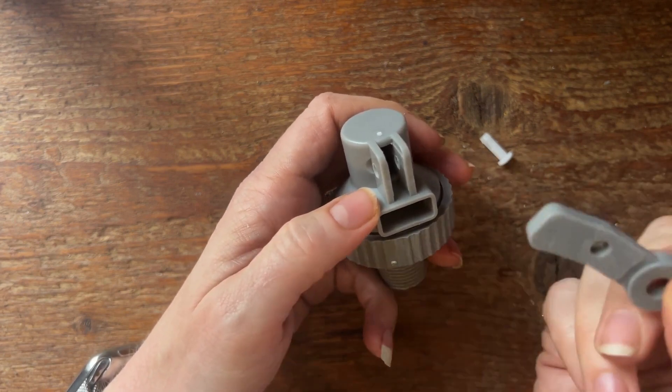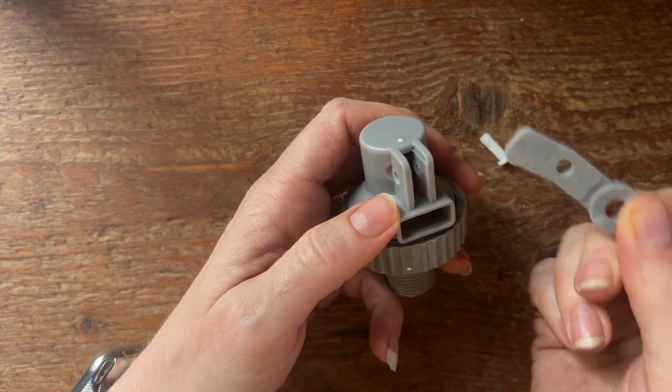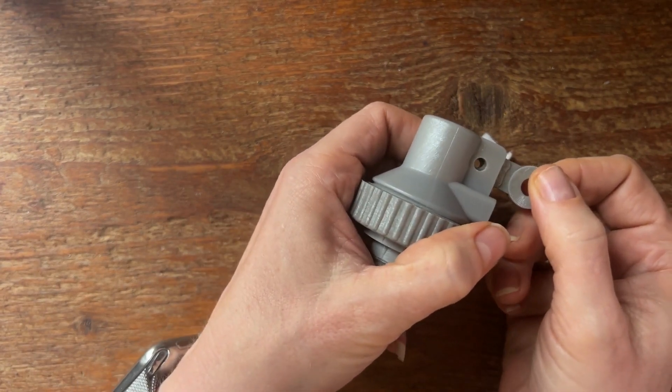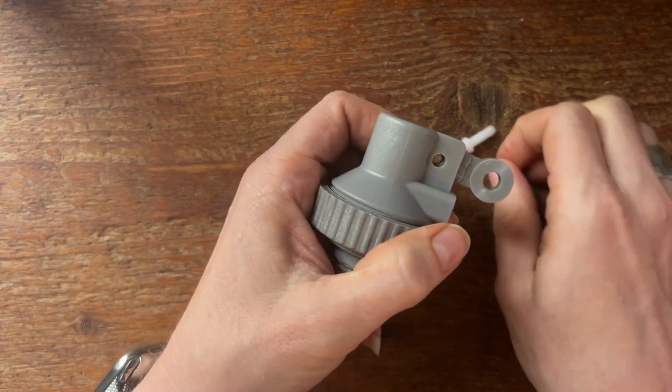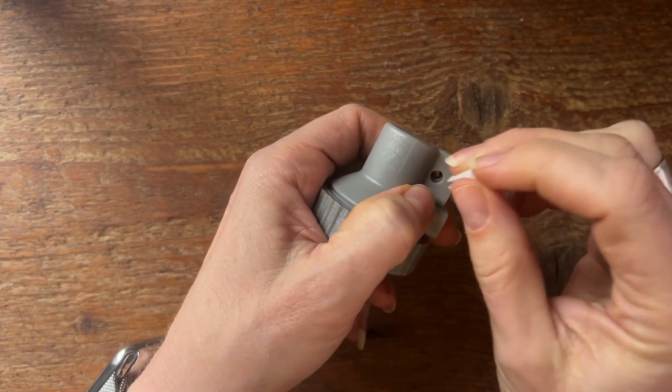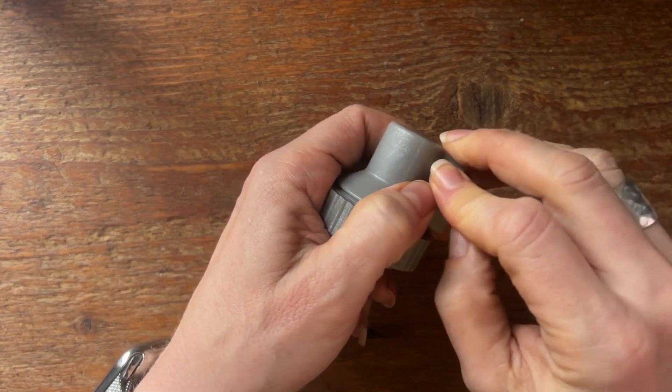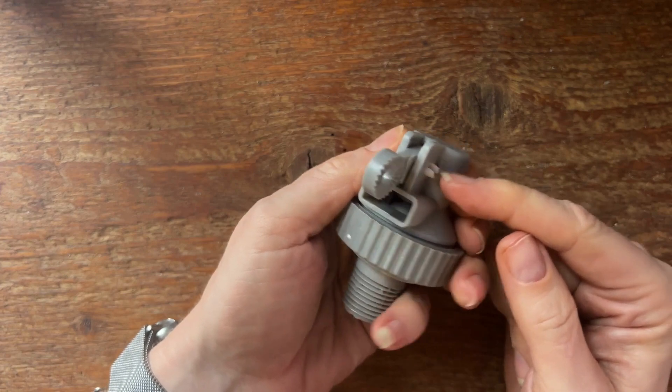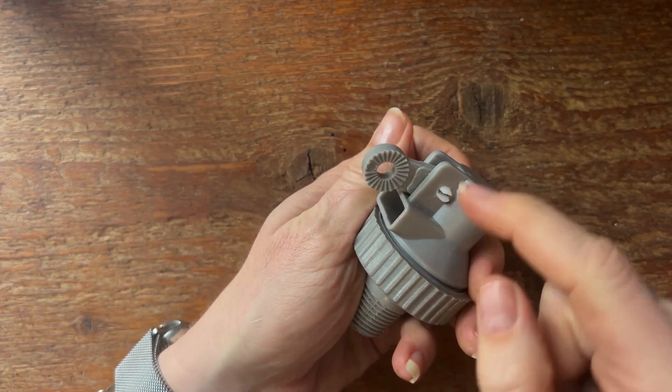But that's how you would remove that. So to reassemble, just go ahead and line those holes up and install the lock pin. It doesn't have to go a certain way. I'm going to install it from the top because it's going to be easier. Just kind of maneuver that around and push it all the way through until you hear it snap.